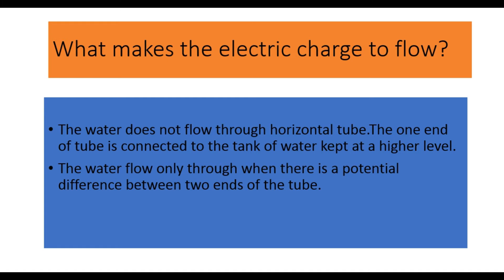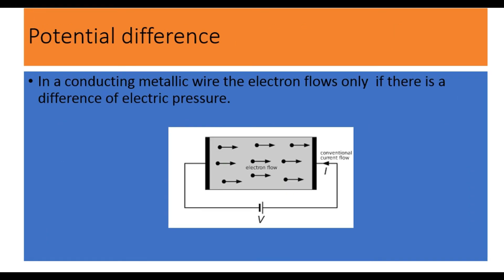Like this phenomenon, we consider a conducting metallic wire. In a metallic wire, electrons flow only if there is a potential difference between the two ends; otherwise the electrons do not flow from one place to another. So if there is a potential difference between the two ends, the electric charges flow — that is, the electrons flow — and then current will pass through the circuit.